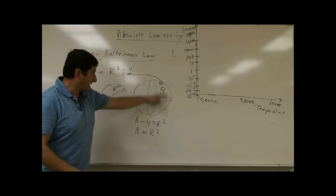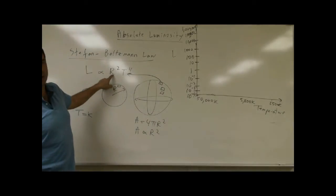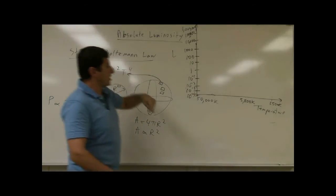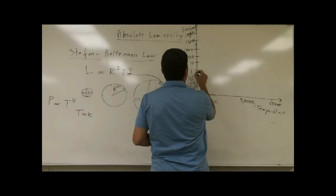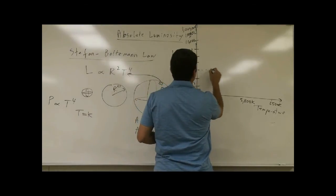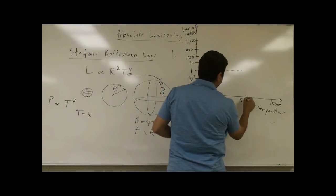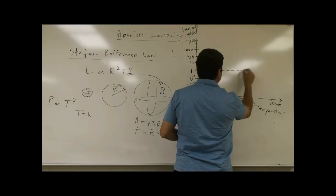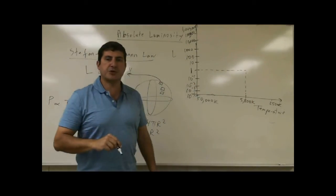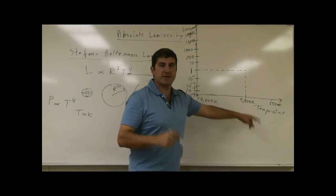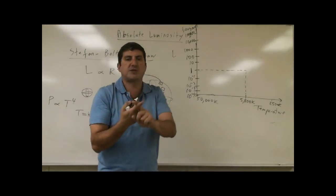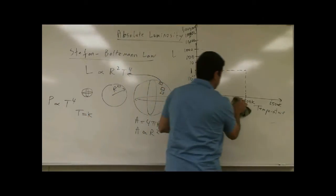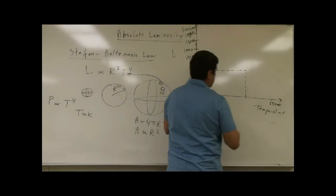Each unit area of the star is radiating proportional to its temperature to the power 4. And since the star has a certain surface area, you multiply that by the surface area of the star. On the HR diagram, the luminosity of the sun is defined as 1, and its temperature is 5,800 Kelvin. We'll define that temperature as 1 as well.